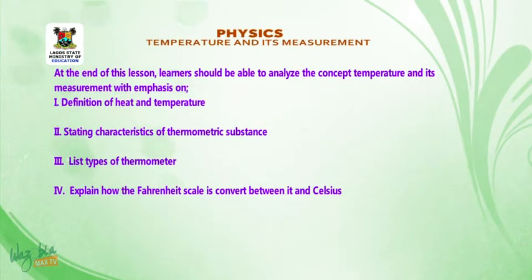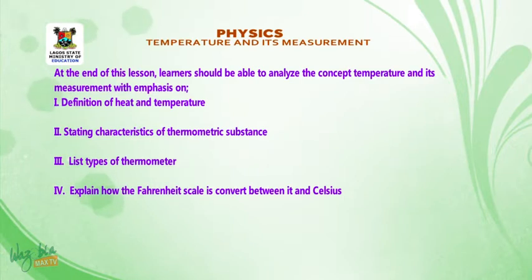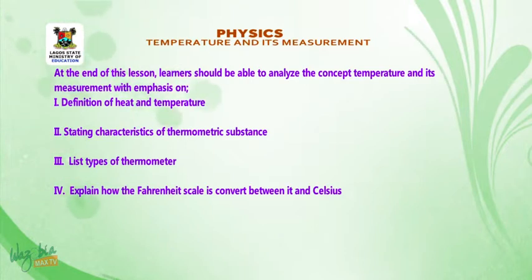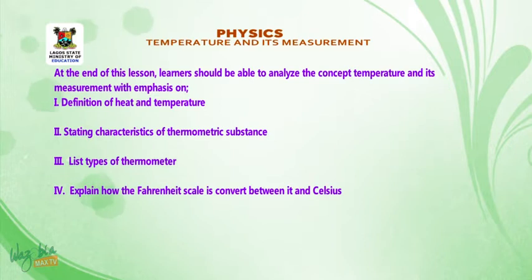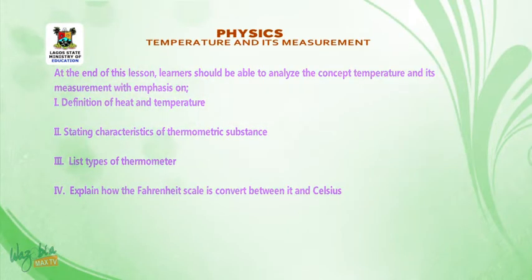At the end of this lesson, learners should be able to analyze the concept of temperature and its measurement, with emphasis on: 1. Definition of heat and temperature; 2. Stating characteristics of thermometric substance; 3. List types of thermometers; 4. Explain how the Fahrenheit scale is converted to the Celsius scale.